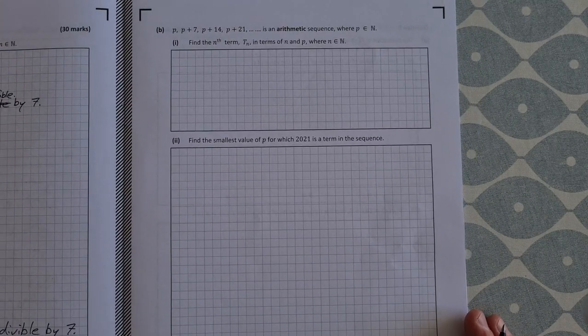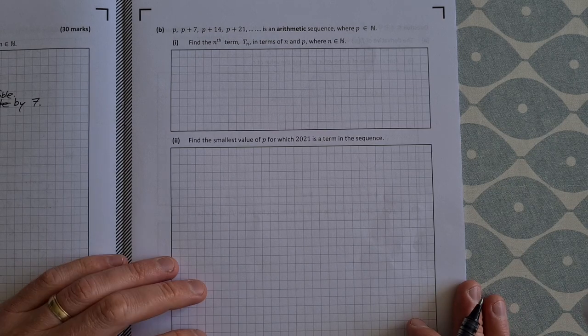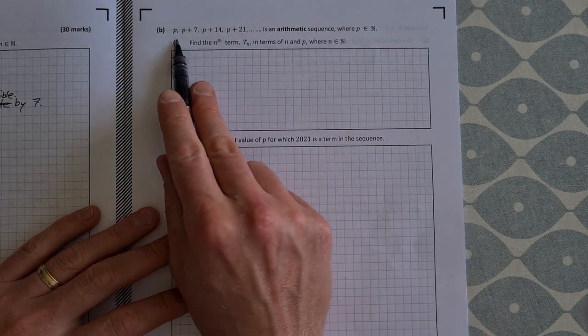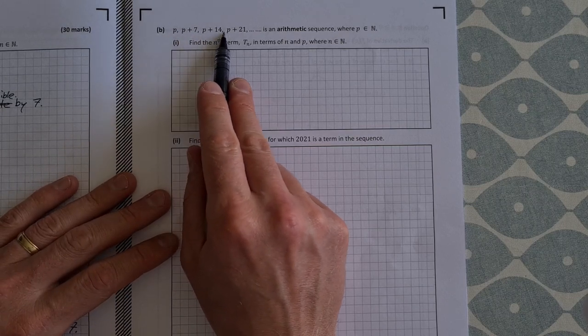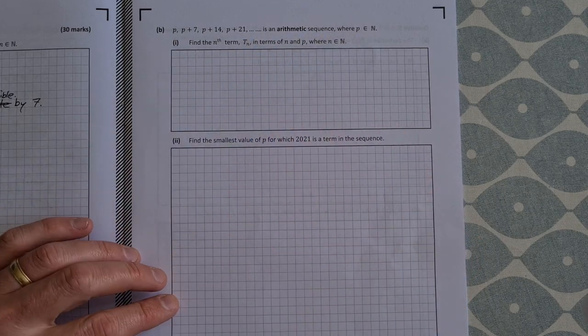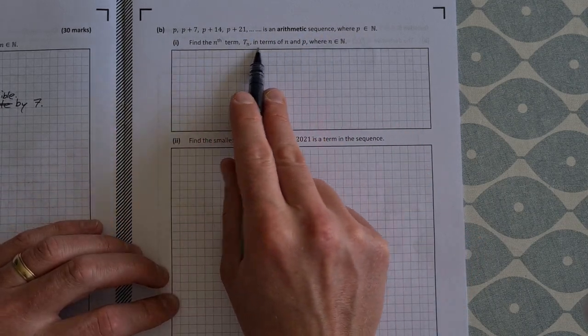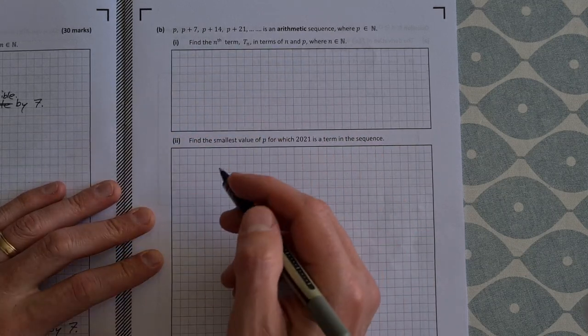Over to part b, so part b is a sequences and series question. So we're given this series here, or sequence here, p, p plus 7, p plus 14, p plus 21 is an arithmetic sequence where p is an element of N. Find the nth term, t_n, in terms of n and p, where n is an element of N.